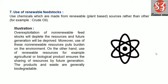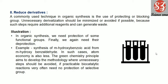By using renewable feedstocks and agricultural and biological products, the waste we generate will be biodegradable, whereas other products generate non-biodegradable and pollution-creating waste. This is why we should use more renewable feedstocks. The next principle is reduce derivatives.